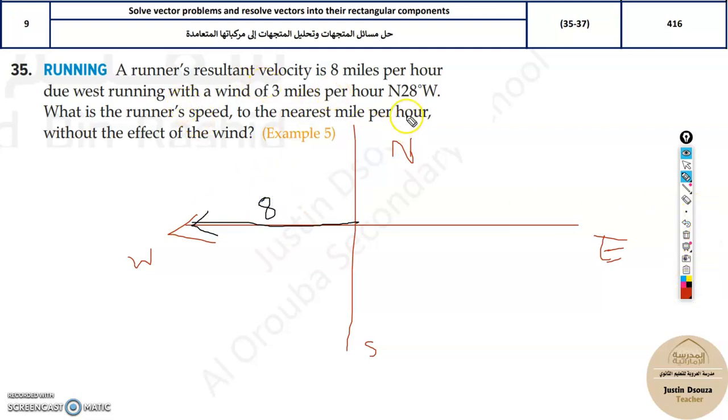With a wind of 3 miles per hour, north 28 degrees west. This is 28 degrees between north and west. This is the vector with magnitude 3. What is the runner's speed to the nearest mile per hour?